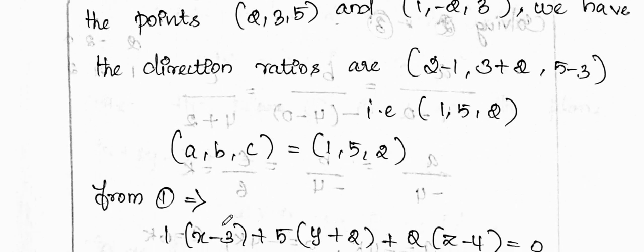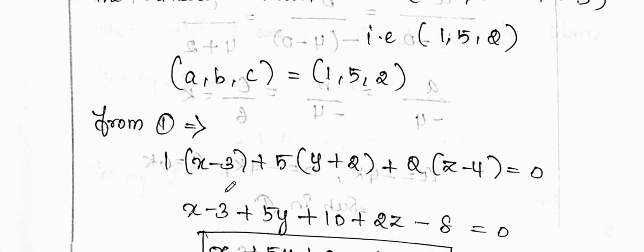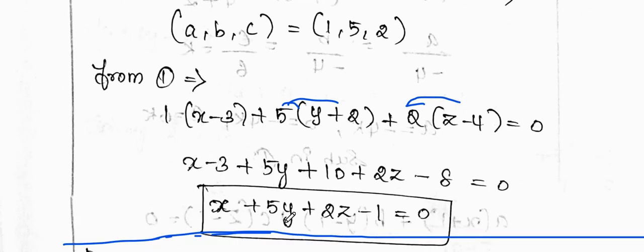Substituting into equation 1: 1(x - 3) + 5(y + 2) + 2(z - 4) = 0. This is the equation of the required plane.